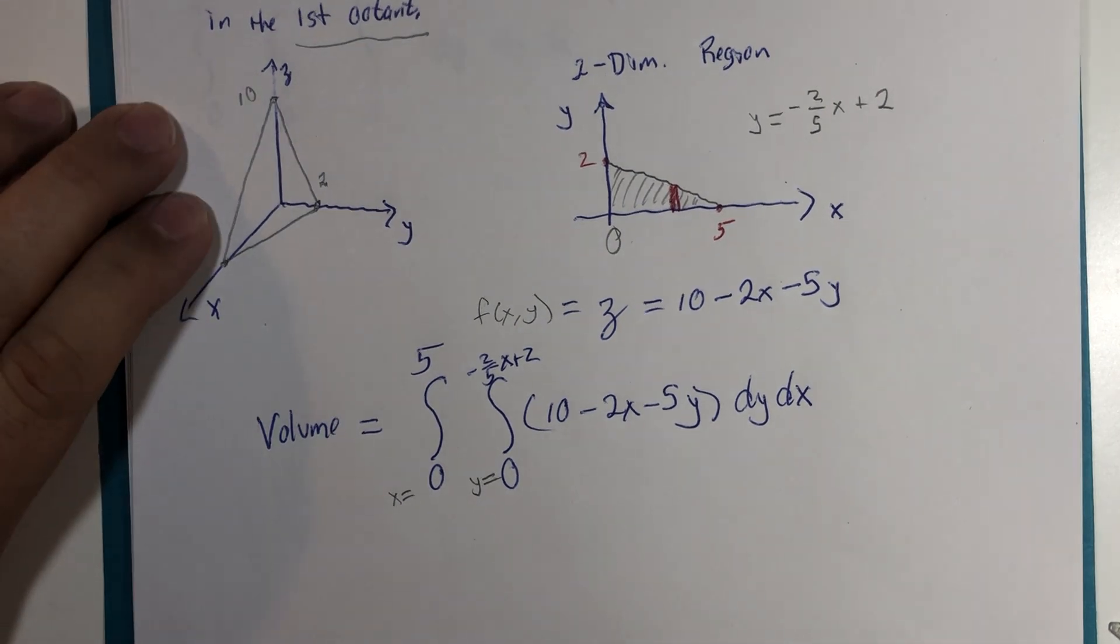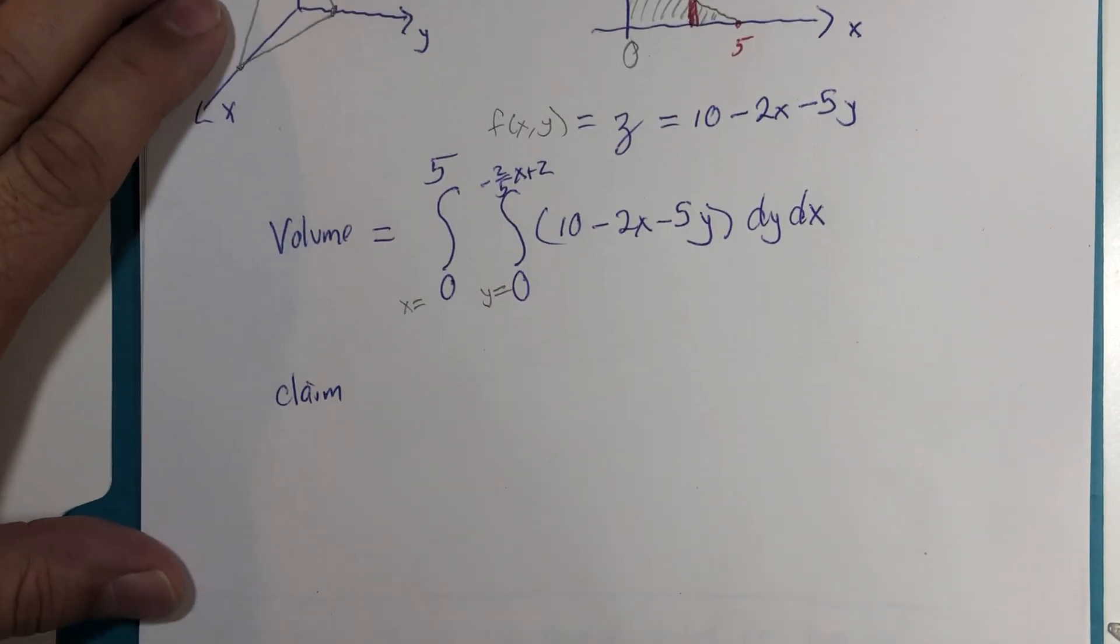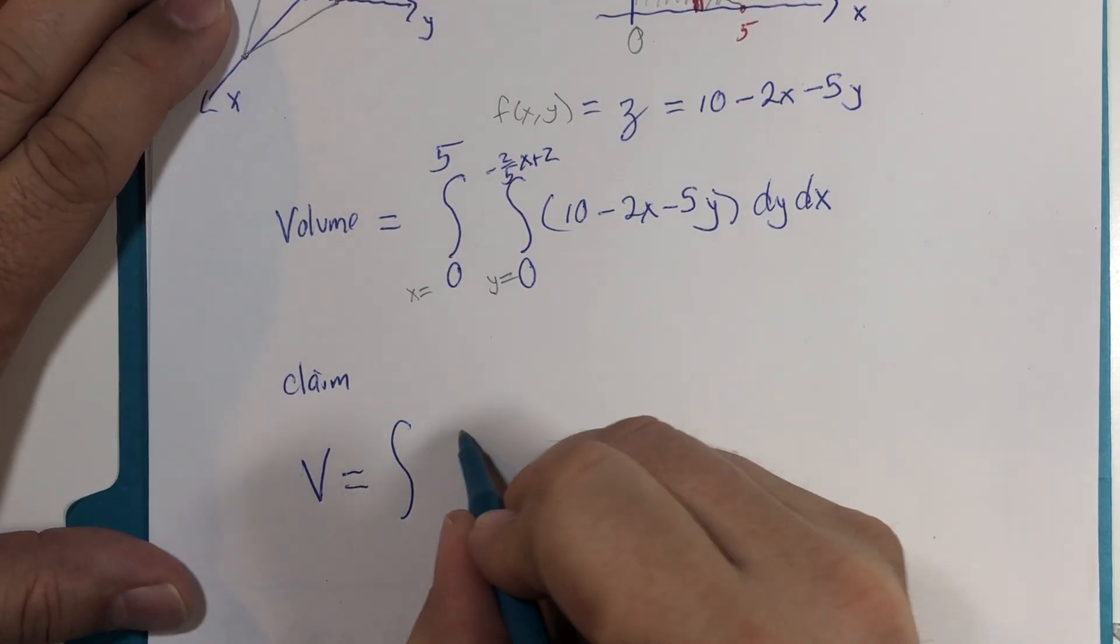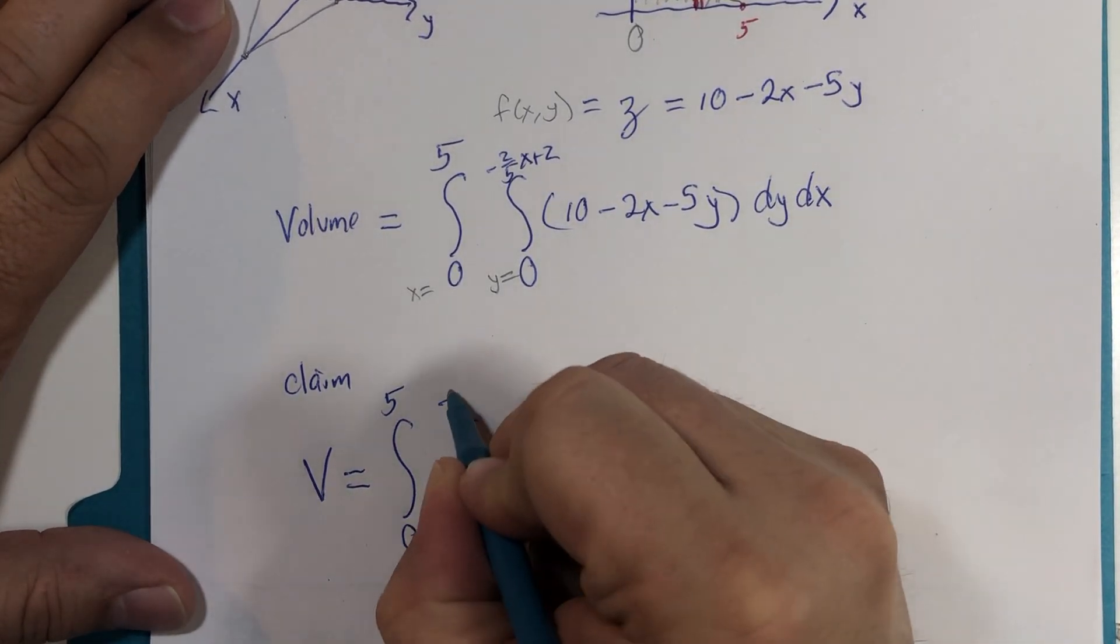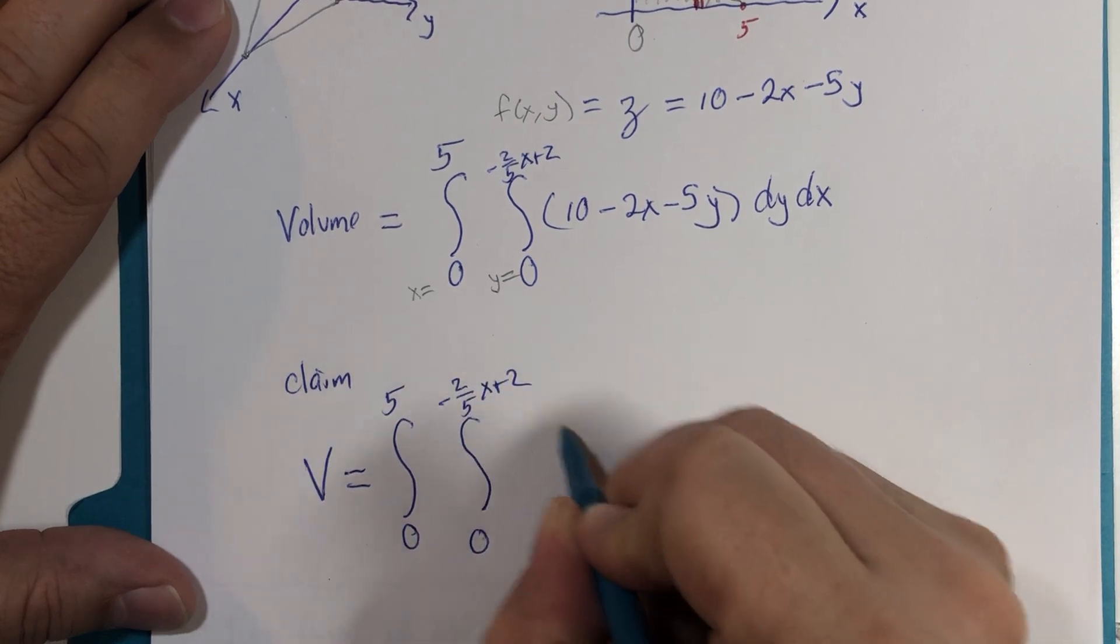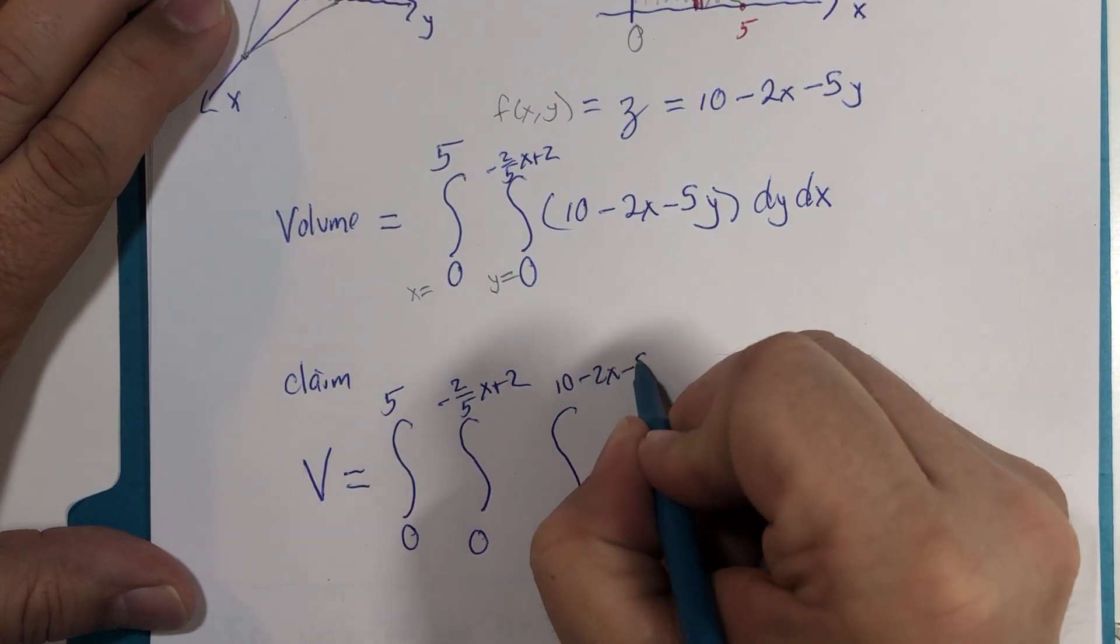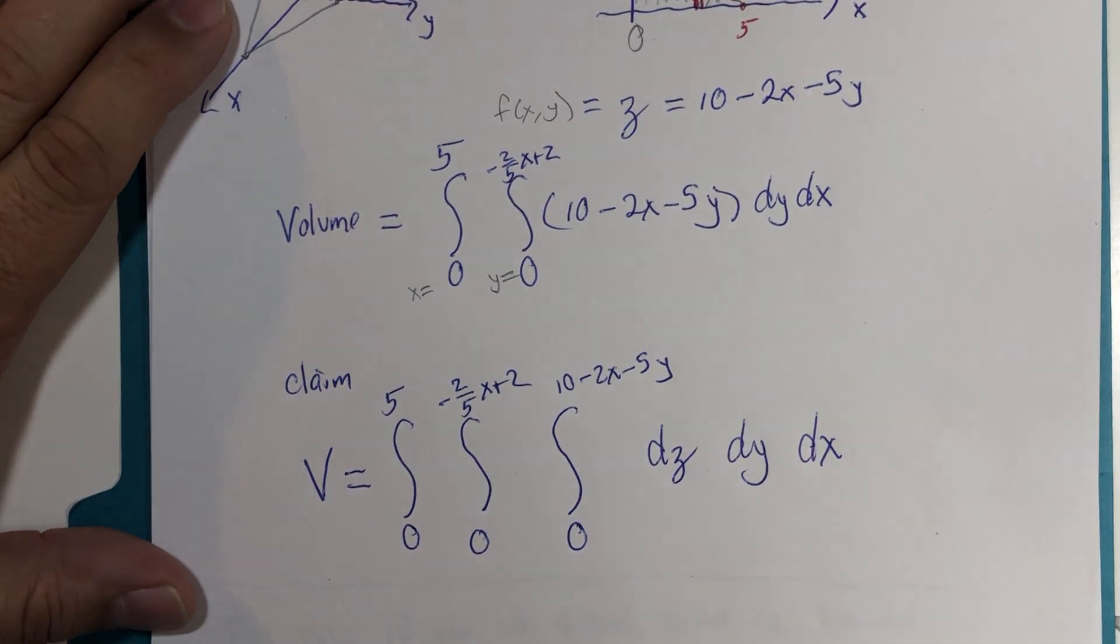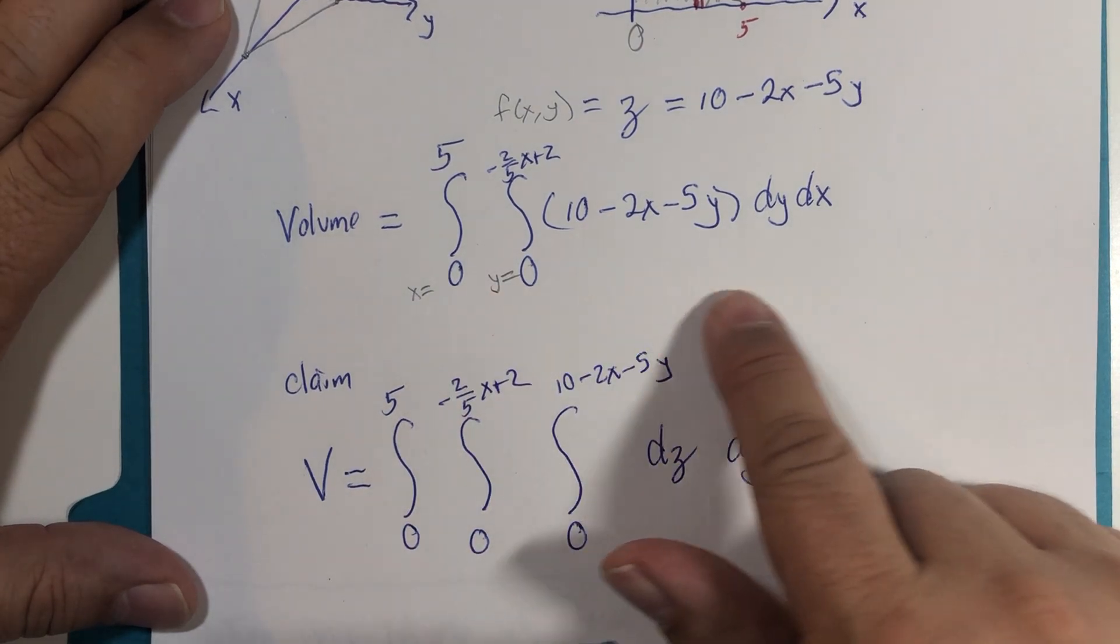So here's what I claim. That volume for a triple integral for this same region, 0 to 5, 0 to negative 2 fifths x plus 2, 0 to 10 minus 2x minus 5y, dz, dy, dx.